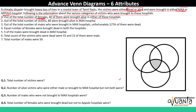We have drawn a three set Venn diagram with regions named A, B, C, D, E, F, G, and H. The first circle belongs to males, so everything outside it will be females. The second circle belongs to Max hospital, so everything outside it will be Apollo hospital. The third circle belongs to people brought alive, so everything outside this set will be brought dead.